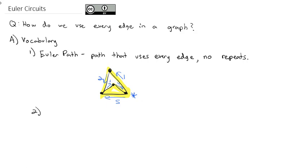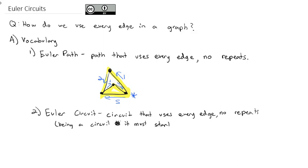And actually, one extension of an Euler path that we might be interested in is what's called an Euler circuit. And remember, circuits start and end at the same point. An Euler circuit, then, is a circuit that uses every edge with no repeats. And of course, being a circuit, it must start and end at the same point.